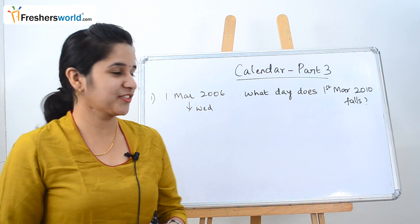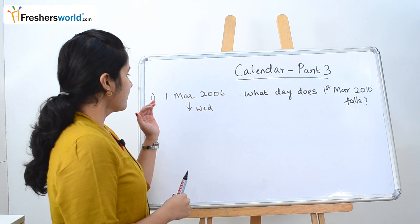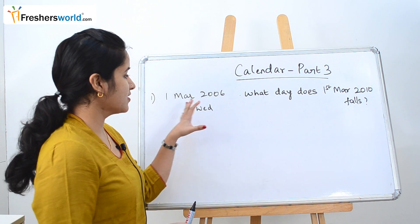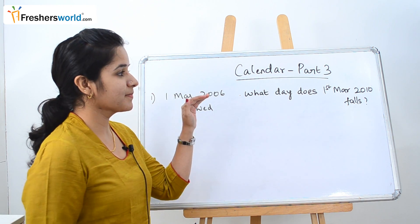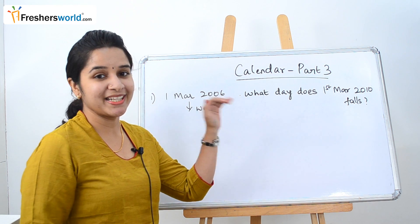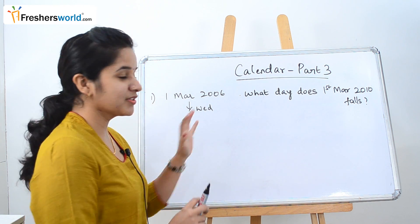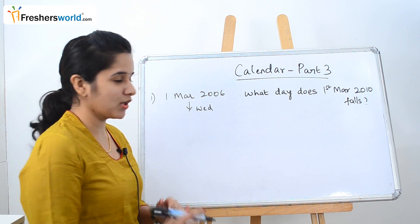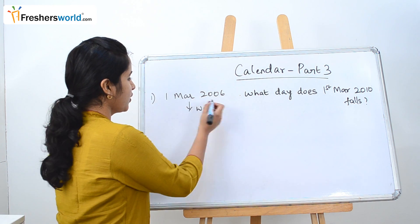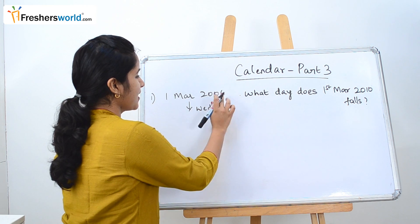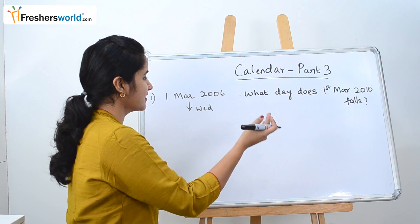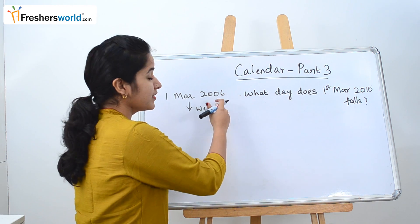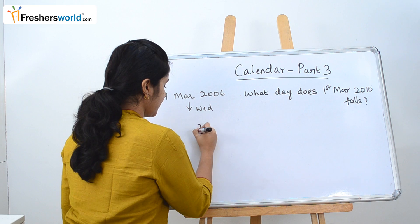The first question is: 1st March 2006 falls on a Wednesday. What does 1st March 2010 fall on? Since the date is 1st March 2006 — it has already crossed February — we will start counting from 2007.